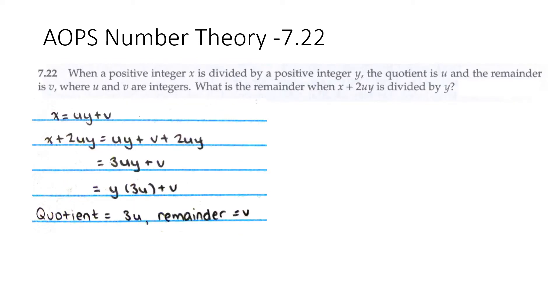Problem 7.22: When a positive integer x is divided by a positive integer y, the quotient is u and the remainder is v, where u and v are integers. What is the remainder when x + 2uy is divided by y?